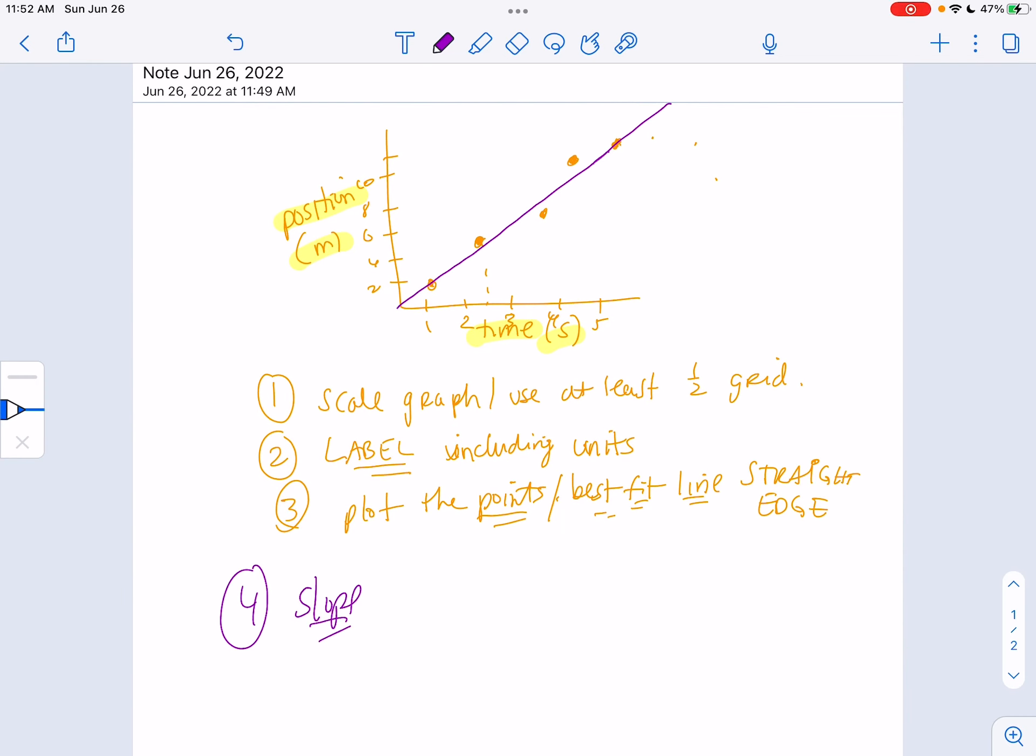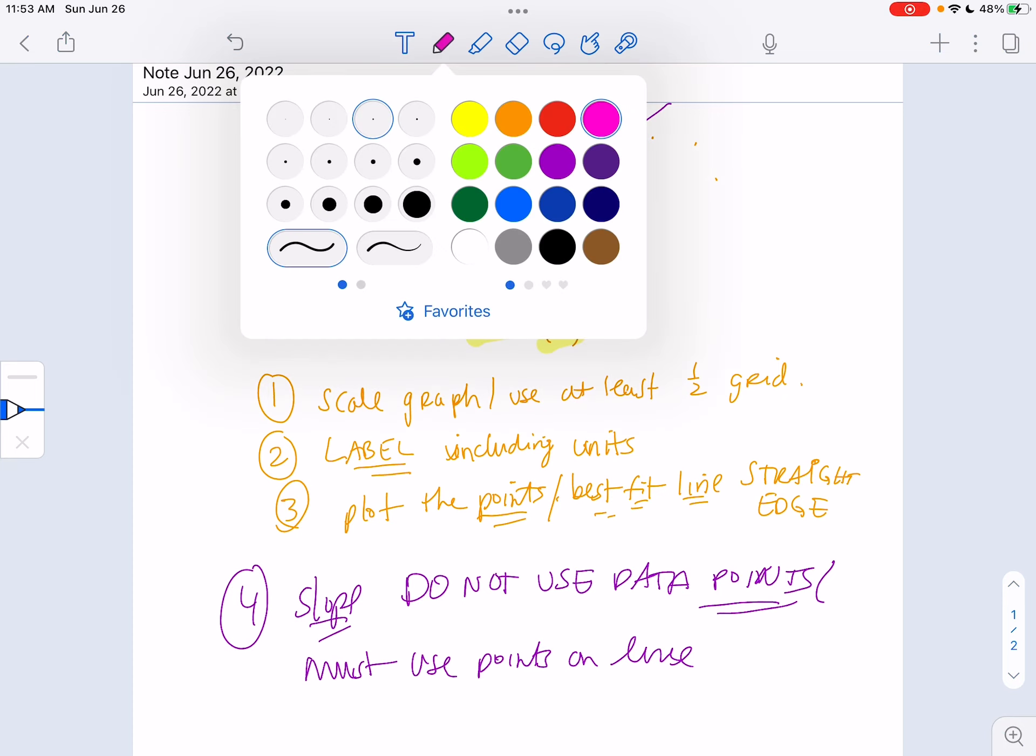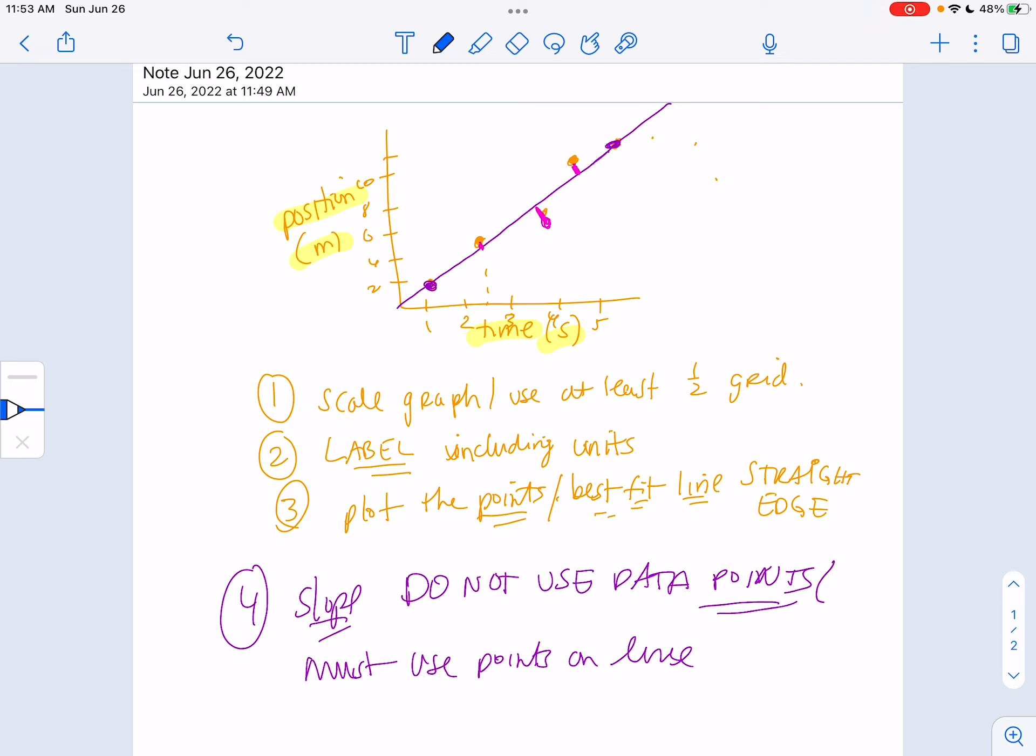And then the fourth thing is when you're finding the slope, this is super important. You cannot use data points from your table. You must use points on the line. Points on the line. So, for example, do you see how this point and this point pretty much hit right on my best fit line? Usually that doesn't even happen, but still don't use it. All right, so however you've drawn your best fit line, this isn't the greatest one, but you want to kind of leave equal amounts. Like if I kind of added up those two distances left out on the top, that should kind of equal that distance from the bottom. So, you kind of need to make the line so that there's as many left out on the top and the bottom. And then when you go to find the slope, you need to use points on the best fit line, not data points. Even like my purple ones, if they're on the line, still do not use them.